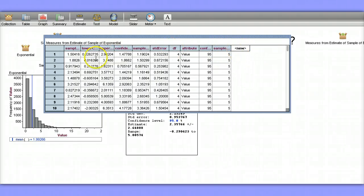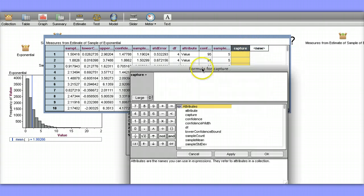Well, what we want to do without having to look at the values here is use Fathom to help us figure out if 1.99266 is between the lower bound and the upper bound. So we're going to create this new attribute called capture, and I'll right-click on this to edit the formula, and I want it to say yes, true, you have caught the true value of the population mean if the value 1.99266 is between the lower bound and the upper bound.